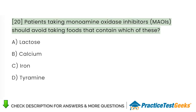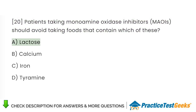Patients taking monoamine oxidase inhibitors should avoid taking foods that contain which of these? A. Lactose. B. Calcium. C. Iron. D. Tyramine.